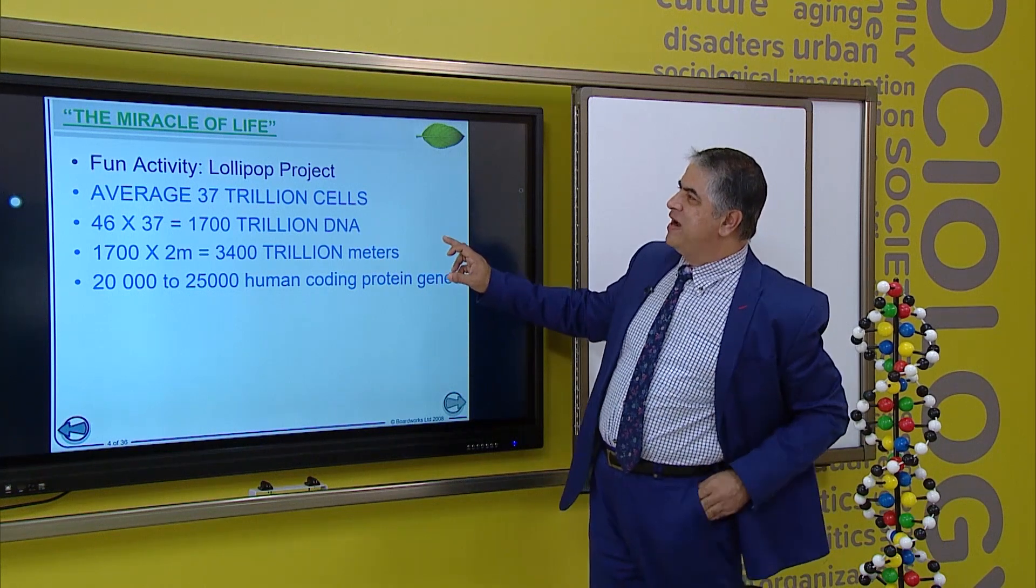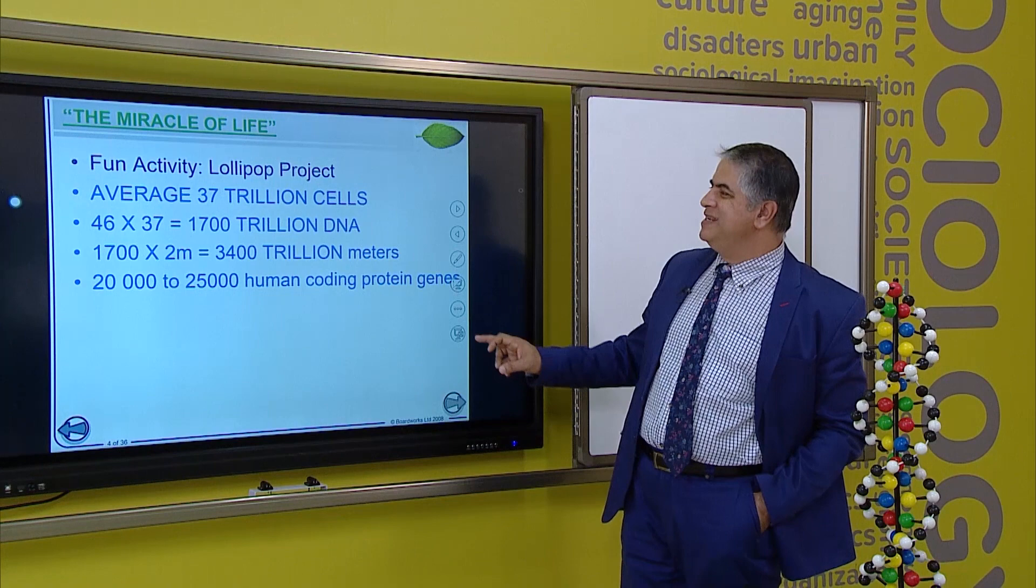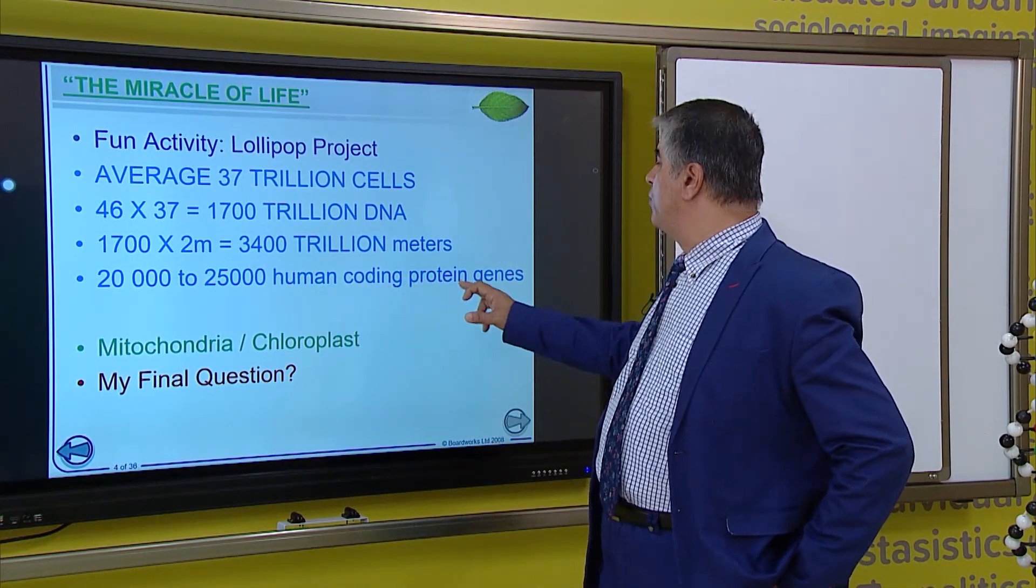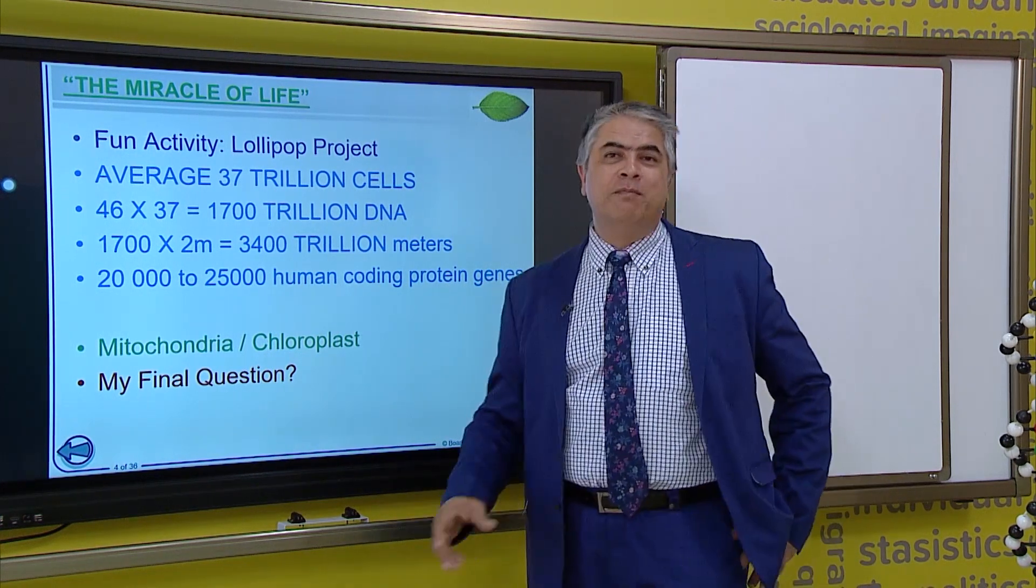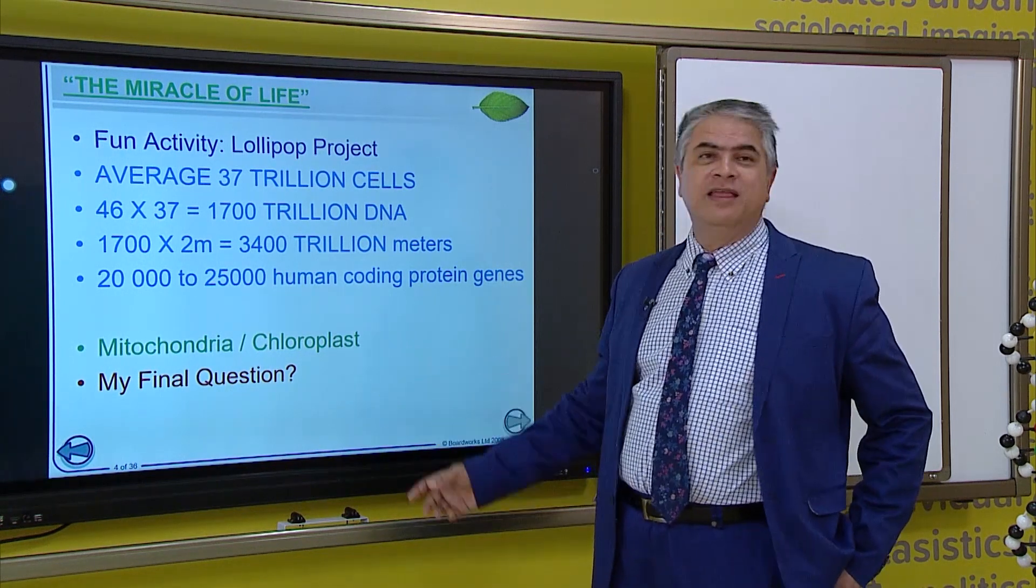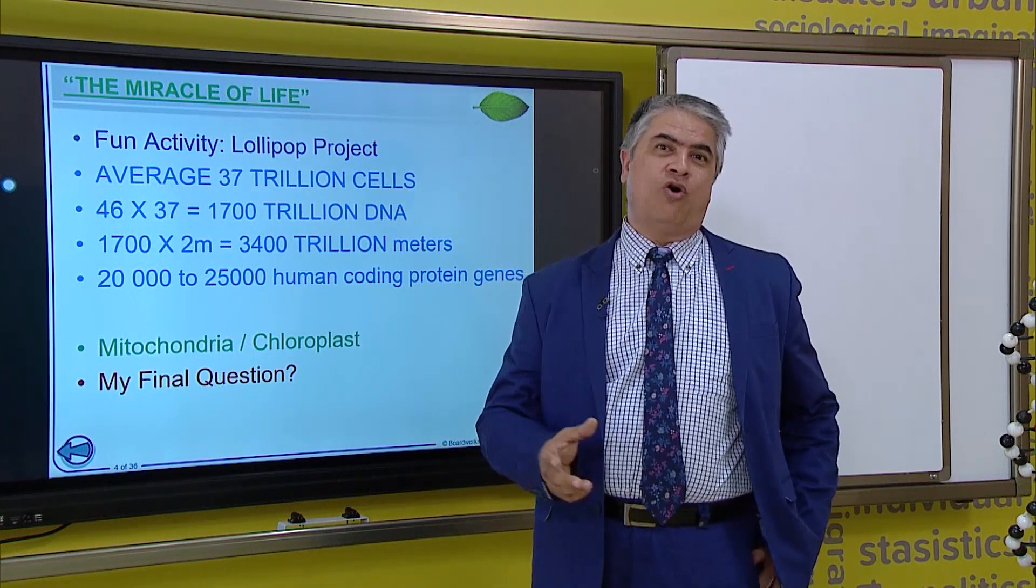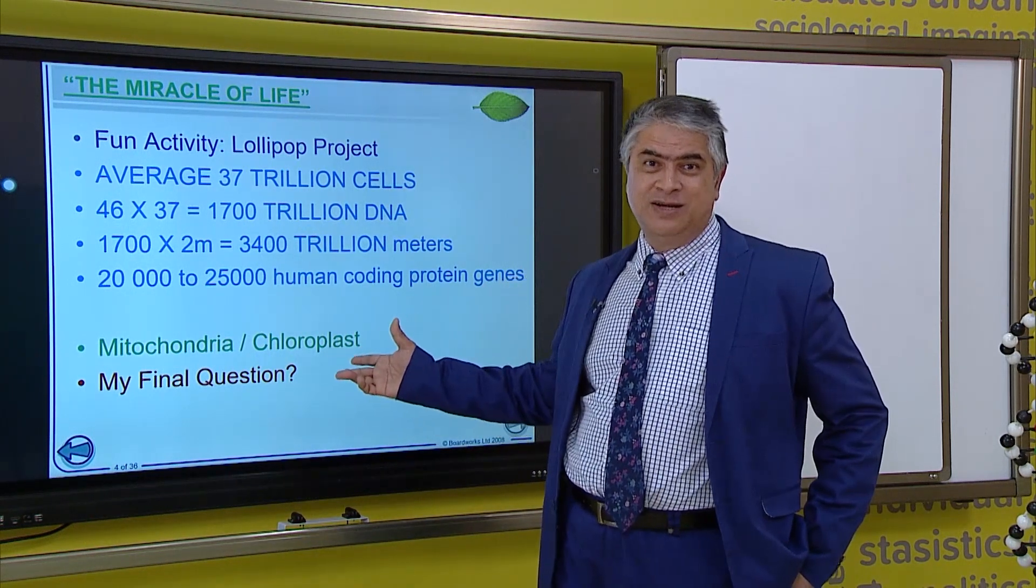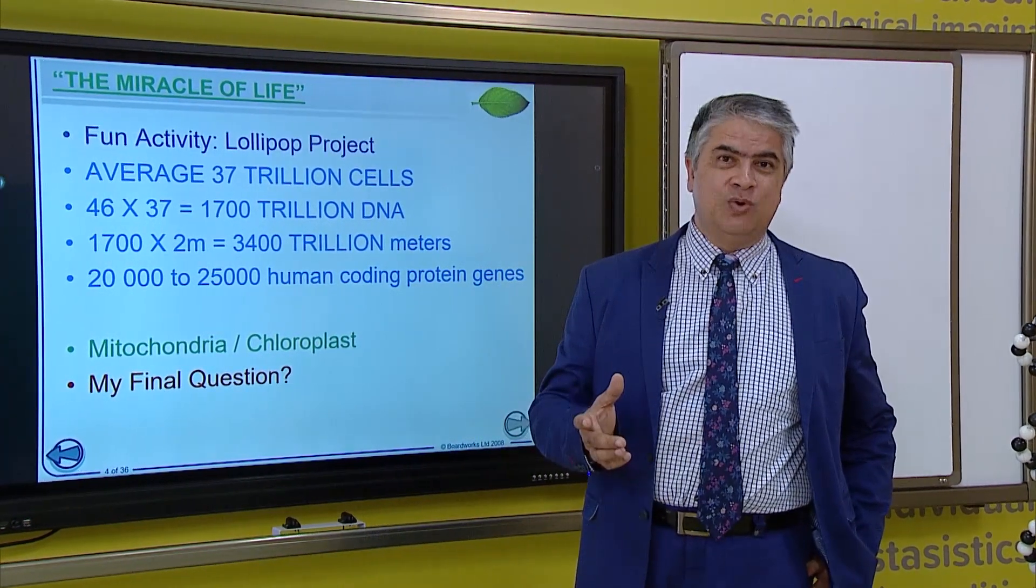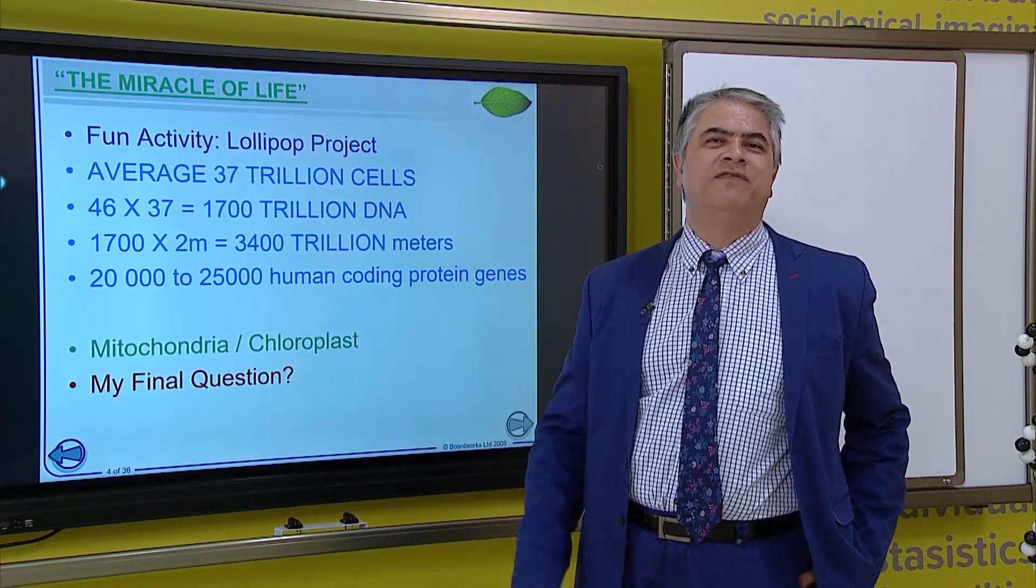So this is the fun facts as far as that 37 trillion cells, that there are 25,000 human coding protein genes. The mitochondria has DNA, so does the chloroplasts. And the final question that I would like to leave you with is, did this all happen by accident? Or is there a great divine creator who has designed this magnificent molecule? Thank you. Have a fabulous day.